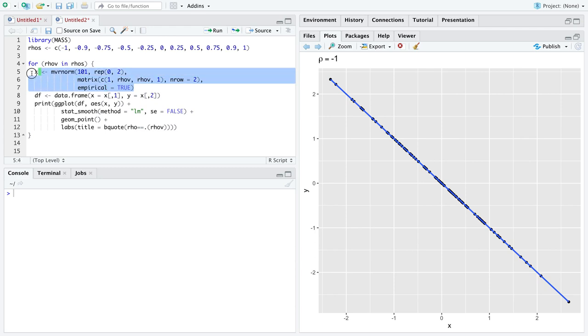And then inside this weird thing I haven't shown you with our code yet, we generate some data, put that data into a data frame, and then make a plot. Now, the only thing that's fancy about the plotting here is this little bit that allows us to type out the Greek letter rho and the value rho takes on.